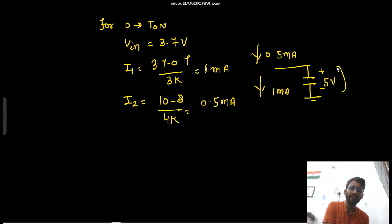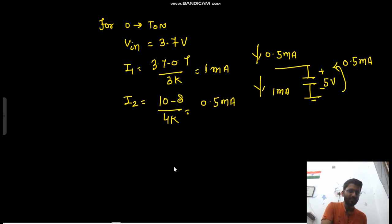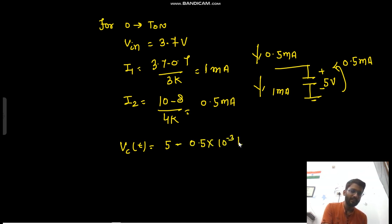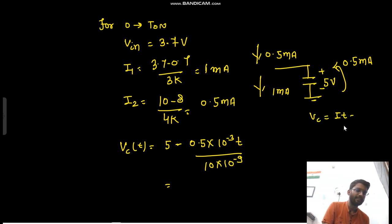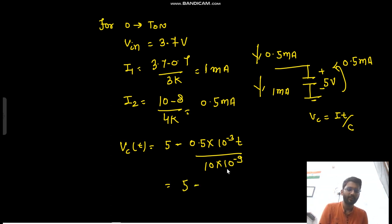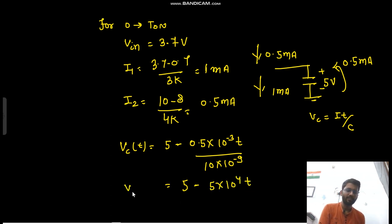There is current flowing in this direction equal to 0.5 mA. So now your VC(t), initially at 5V, will change by IT/C: 0.5 × 10⁻³ × T / (10 × 10⁻⁹). Because the current 0.5 mA is constant, for constant current VC = IT/C. So VC(t) = 5 − 5 × 10⁴ × T. This is your VC(t) expression.